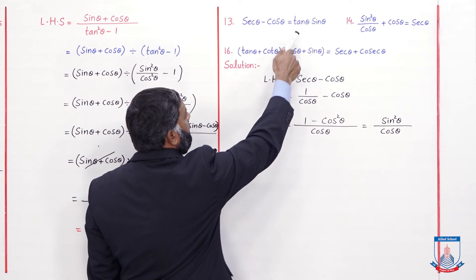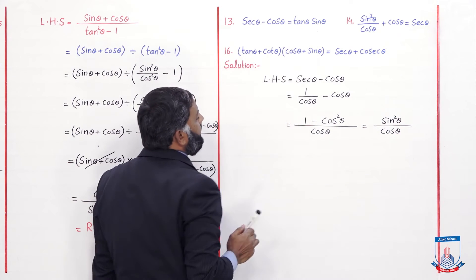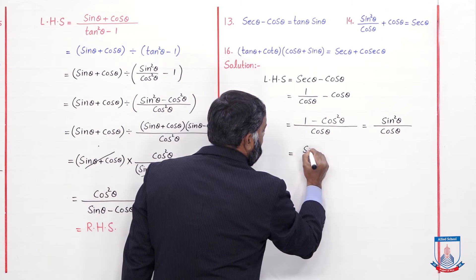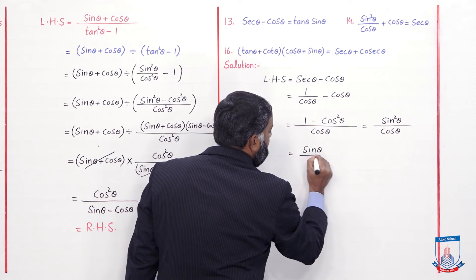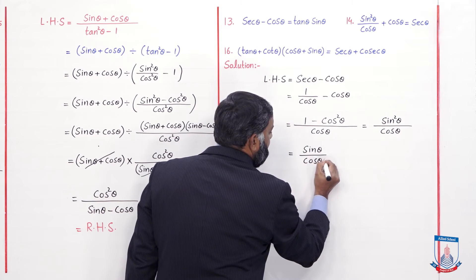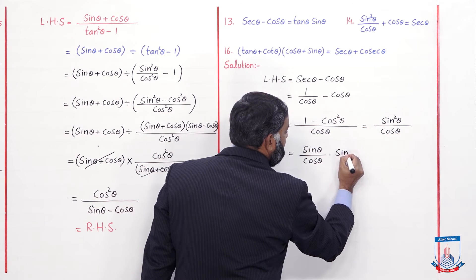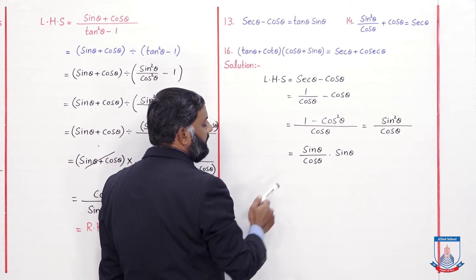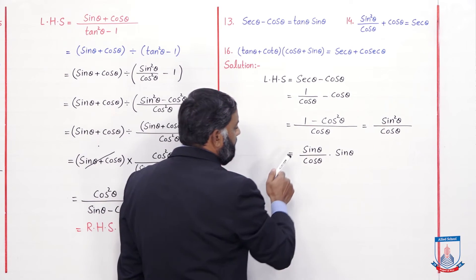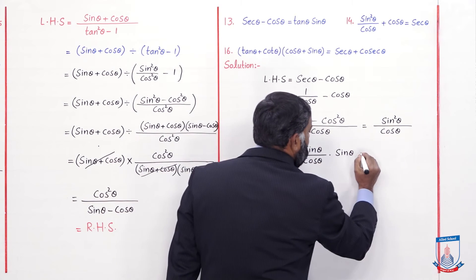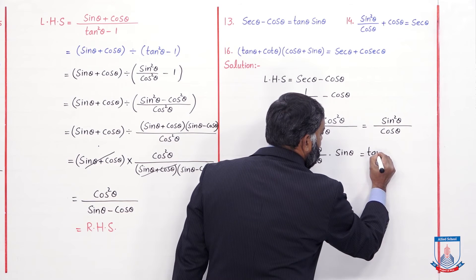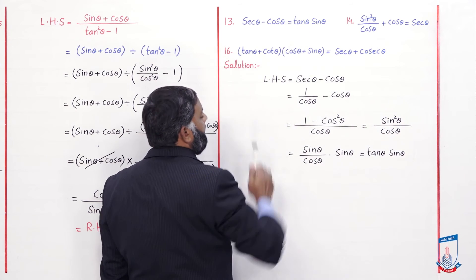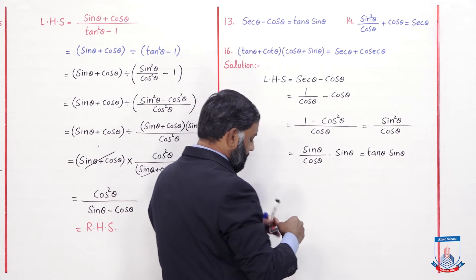Now the right hand side given in the statement has tan θ · sin θ. This is sin²θ; from it we separate one sin θ: over cos θ · sin θ. sin · sin gives sin²θ, with no effect on the equality. Now sin θ / cos θ equals tan θ, so we write tan θ · sin θ. This is the right hand side, so this identity is also verified.